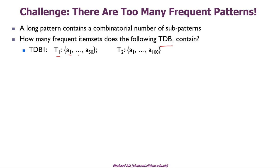Transaction T2 contains 100 items: A1, A2, A3 up to A100. Suppose we set the minimum absolute support to only 1. That means everything in the transaction database is frequent — any item occurs at least once in the database. So if we set the minimum support to 1, everything is frequent.